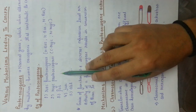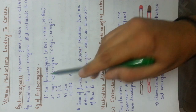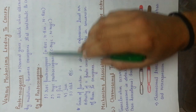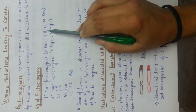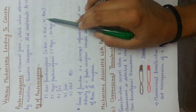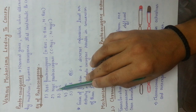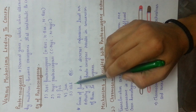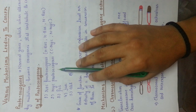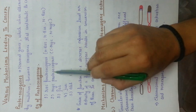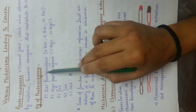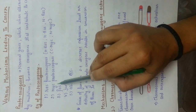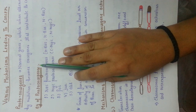Here are certain examples of proto-oncogenes. Ras proto-oncogenes include H-ras, K-ras, and N-ras. Myc proto-oncogenes include C-myc and N-myc. Others include Fos, Jun, and ABL. These are all kinds of proto-oncogenes. If any kind of mutation occurs in these proto-oncogenes, it will ultimately lead to cancer.